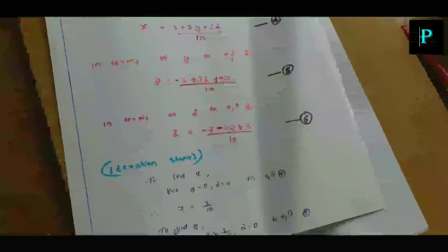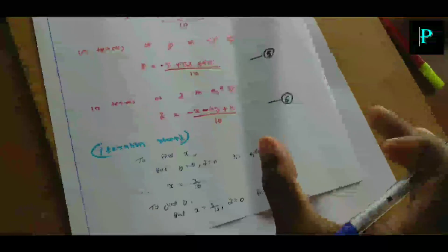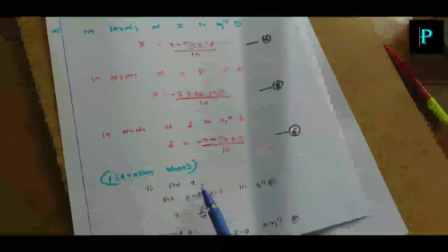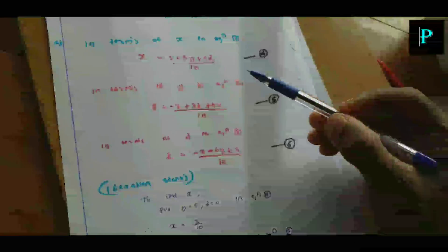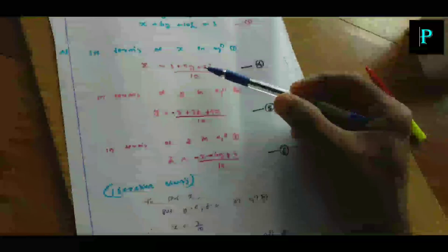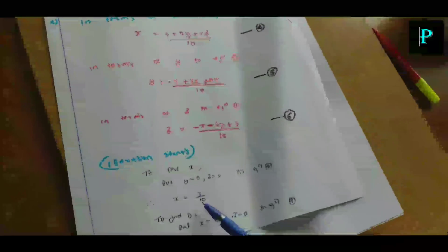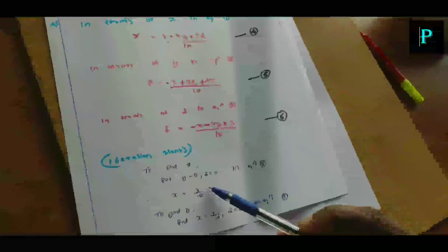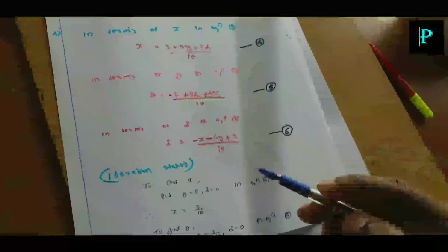We have X and Y values with 3 decimal places. We set Y equal to 0 and Z equal to 0. Then X is equal to 3 plus 5 times 0 plus 2 times 0, divided by 10, which is equal to 3 by 10, that is 0.3.